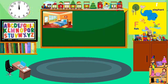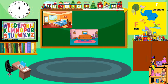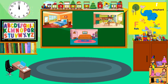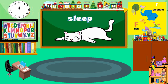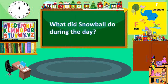Where did Snowball sleep? He sleeps in the bedroom — you are correct! He also sleeps in the living room and in the kitchen. What did Snowball do during the day? You are correct — he sleeps all day. He sleeps, he walks, and he plays.